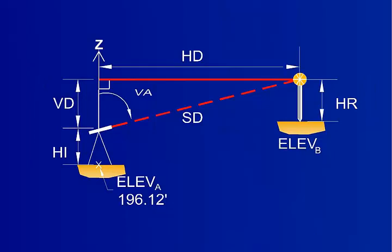Now let's calculate the elevation at B, or where the prism was located. We'll use the slope distance and vertical angle taken from the total station. The slope distance was 82.95 feet, and the vertical angle was 89 degrees, 17 minutes, and 55 seconds.